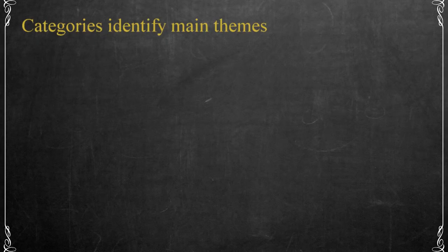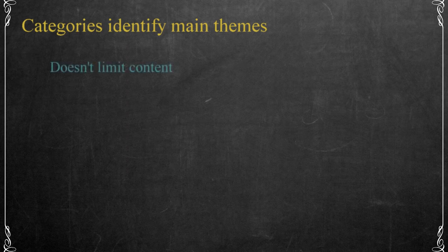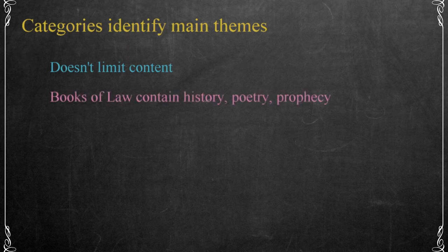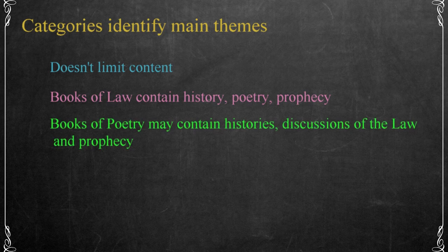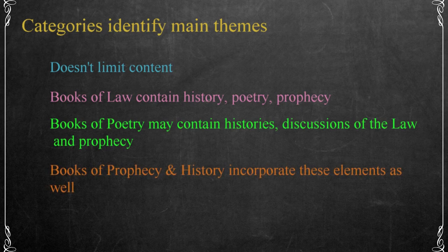These categories are only a tool to assist in understanding the predominant themes in each of the groups. While the name identifies the primary focus of the group, it doesn't limit the content to a particular type. For example, books of law also contain history, poetic language, and prophecy. Poetic books may relate histories, contain prophetic elements, and discuss points of law. The books of prophecy and history incorporate each of these elements as well.